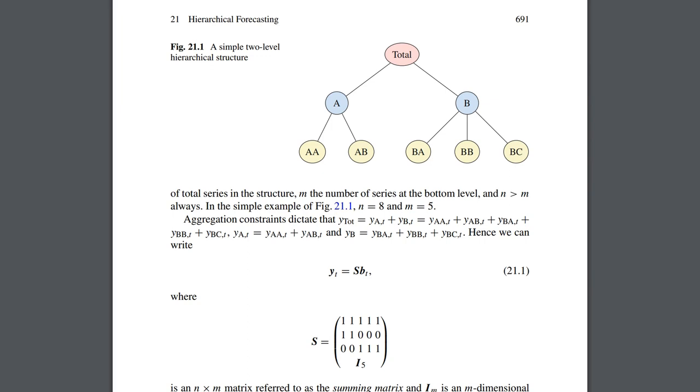First, let's look at an example of a hierarchical structure. This is the simplest case where you add these two time series, AA and AB, on the bottom layer in order to get this other time series, A, on the layer above it.